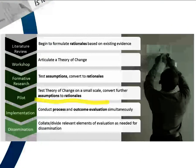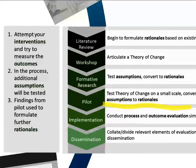Once you've done this formative research and converted as many assumptions as you can to rationales, then you want to actually test the whole program. So you can run a pilot — this might mean that you work in one clinic, have a small number of health workers that you train, recruit patients, run the program, and do the whole evaluation on this small scale. That enables you to further test any remaining assumptions and convert them to rationales, while also testing the evaluation plan for your program and making sure the intervention is more likely to work.